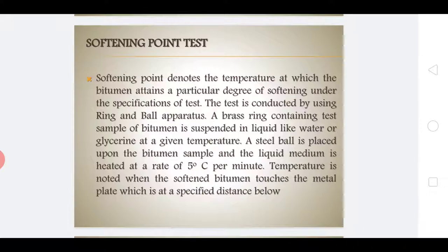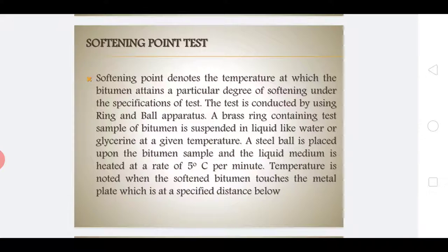As the water is heated, the bitumen becomes viscous and the 3.5-gram metal balls exert pressure on the bitumen, slowly sinking through the rings. When the ball touches the bottom plate, the test is stopped and the softening point is recorded. For accuracy, the average of two to three samples is taken. If the expected softening point is above 80°C, glycerin is used instead of water, with an initial temperature of 35°C.